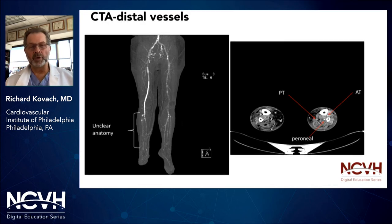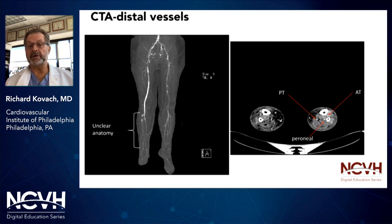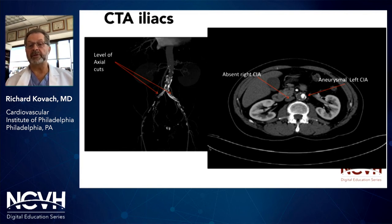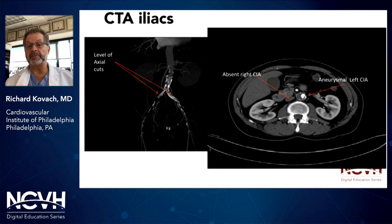CTA becomes more difficult to interpret in distal vessels, particularly in diabetics and patients with CKD, because these vessels are not only smaller but often intensely calcified. Looking at the trifurcation vessels on axial cuts gives more in-depth information than the reconstructed view. At the level of the bifurcation, cross-sectional views clearly show a totally occluded vessel on one side and, on the other, a patent vessel with an aneurysm present. Again — learn to read the axial cuts.